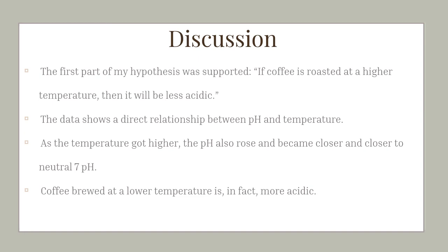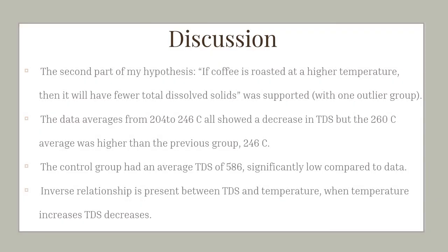The first part of my hypothesis was supported by the data. If coffee is roasted at a higher temperature, then it will be less acidic, because as the temperature got higher, the pH rose and became closer and closer to a neutral pH of 7. So coffee brewed at a lower temperature is more acidic. The second part of my hypothesis — if coffee is roasted at a higher temperature, then it will have fewer total dissolved solids — was also supported, with one outlier group.